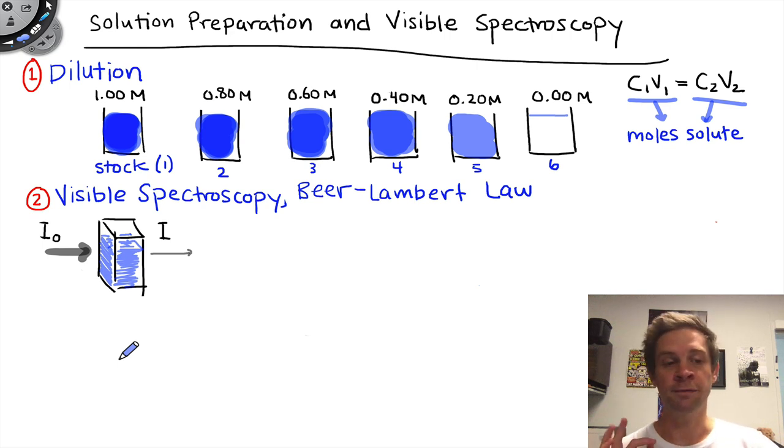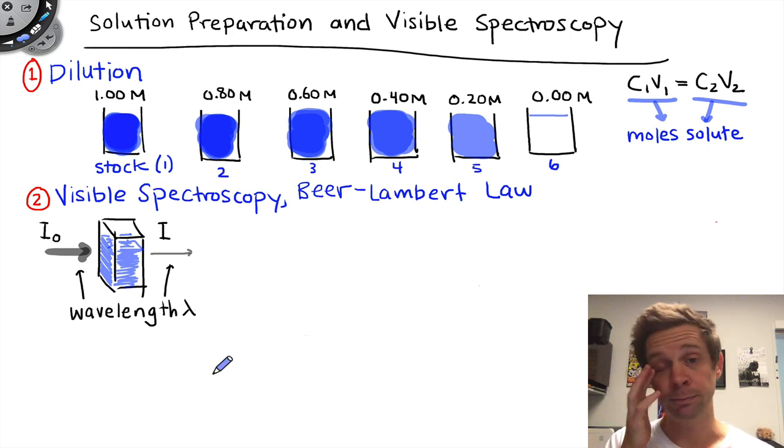It does this for a variety of different wavelengths of incoming and outgoing light that we'll abbreviate using the symbol lambda. And the full graph of the wavelength dependence of the intensity of light is what's known as a spectrum.